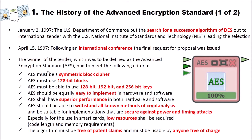First, AES must be a symmetric block cipher — a block of data goes into the cipher, and encryption or decryption comes out as the same block size, using 128-bit blocks. AES must be able to use 128-bit, 192-bit, and 256-bit keys — three different key sizes. AES should be equally easy to implement in hardware and software. This was also a problem with DES: DES was easy to implement in hardware, but not very performant in software. AES shall have superior performance in both hardware and software.